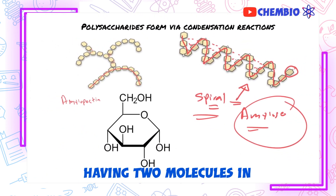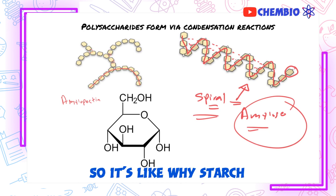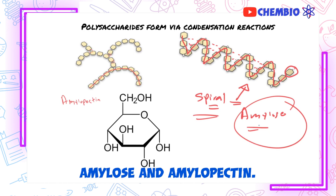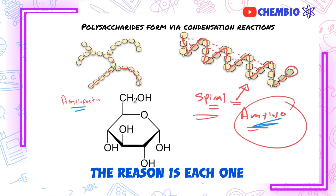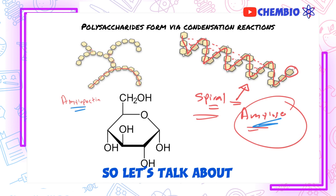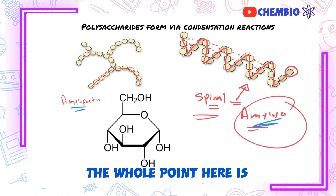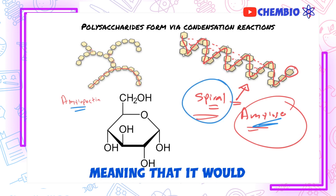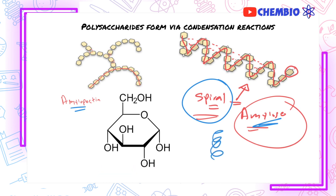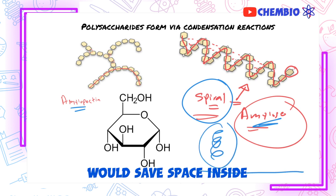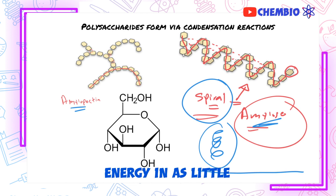What's the point of having two molecules in starch — why is starch a combination of amylose and amylopectin? The reason is each one of those molecules provides one great advantage. Let's talk about amylose first. What's the point of being spiral and linear? Being spiral means it would occupy less space inside the cell. To coil a molecule rather than keeping it linear saves space. Plant cells are quite keen to store as much energy in as little space as possible. That's one great advantage of amylose.